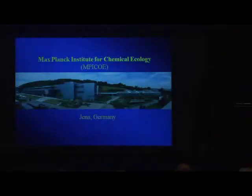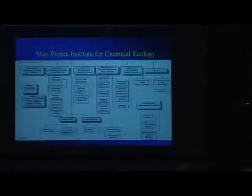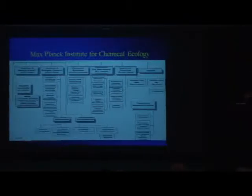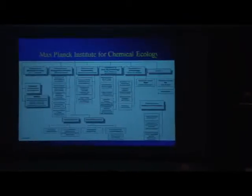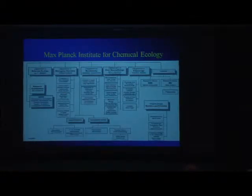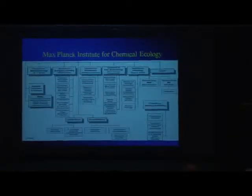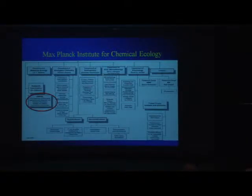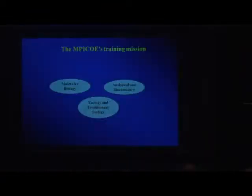When I had a chance to start this institute in 1996 in Jena, I wanted to not only bring together colleagues to study chemical ecology — ecologic interactions mediated by chemistry — by bringing chemists, biochemists, neuroethologists, and entomologists together in one organizational agreement, but I also wanted to create a graduate training environment where students could be trained throughout the whole spectrum of biological processes.